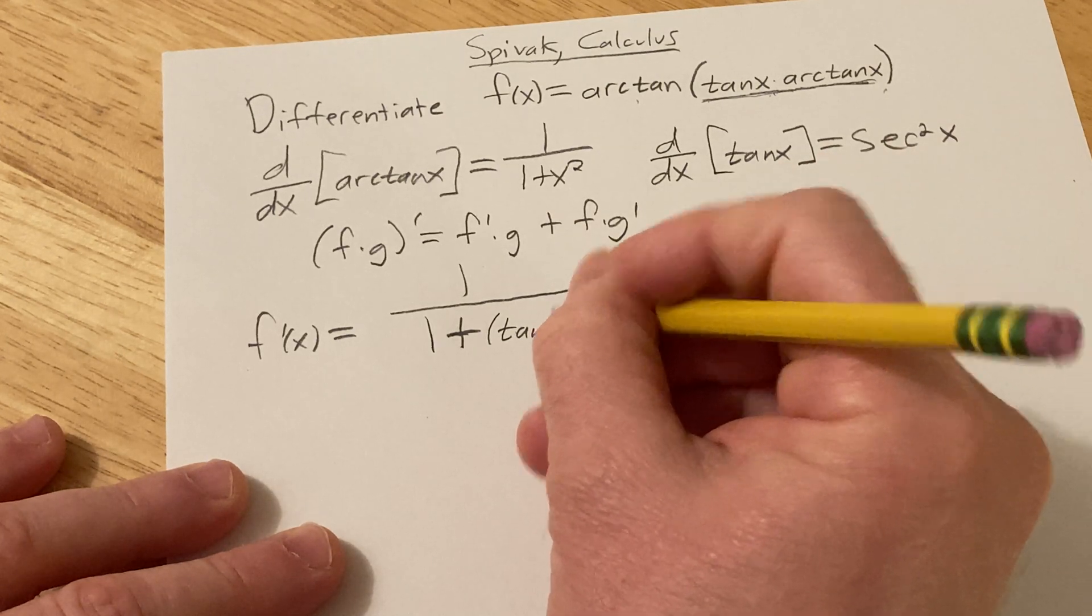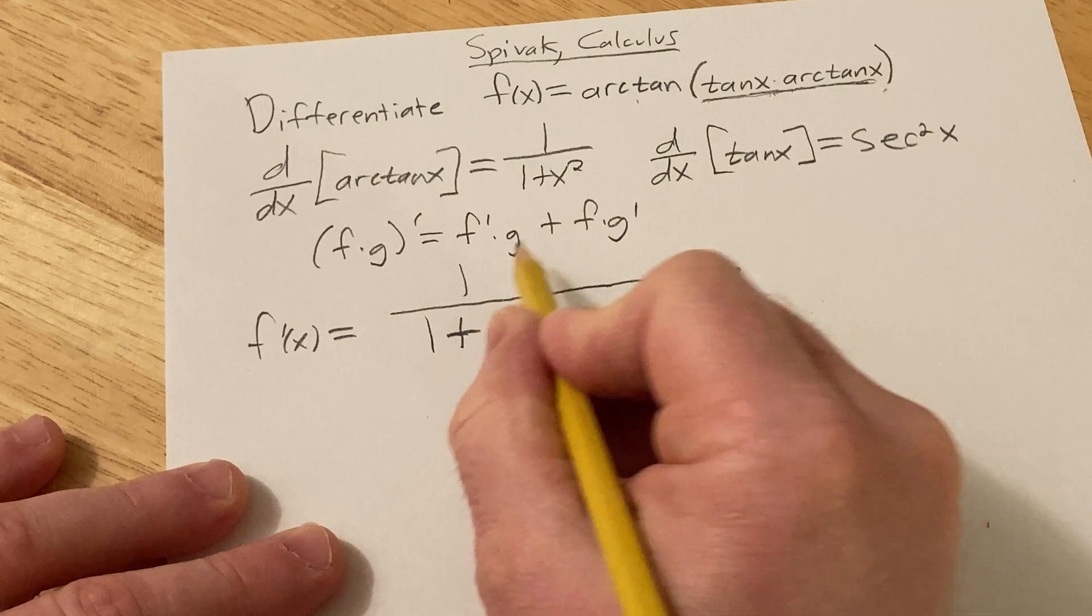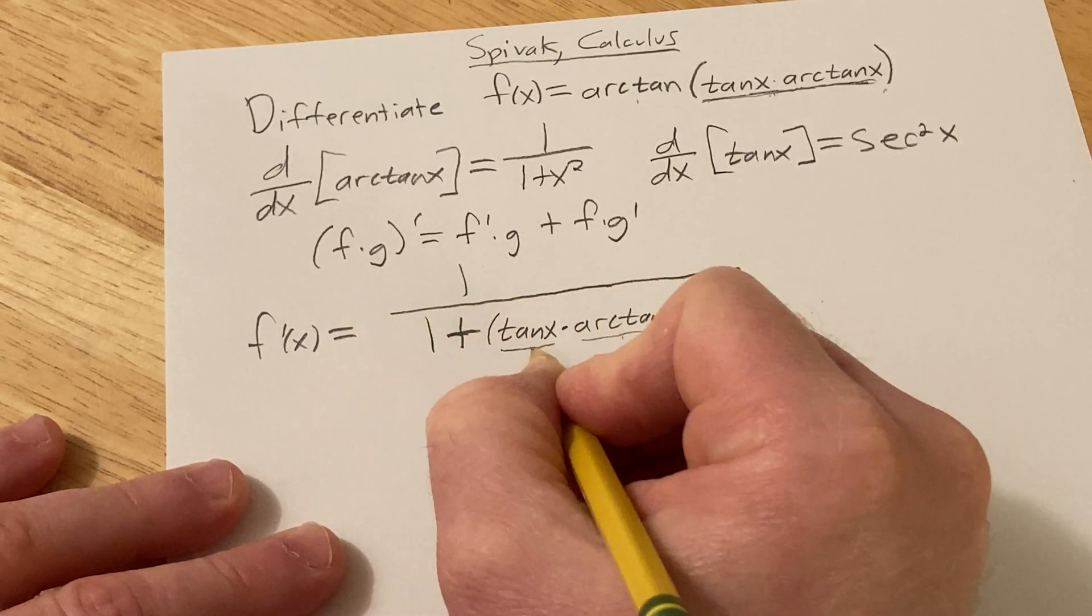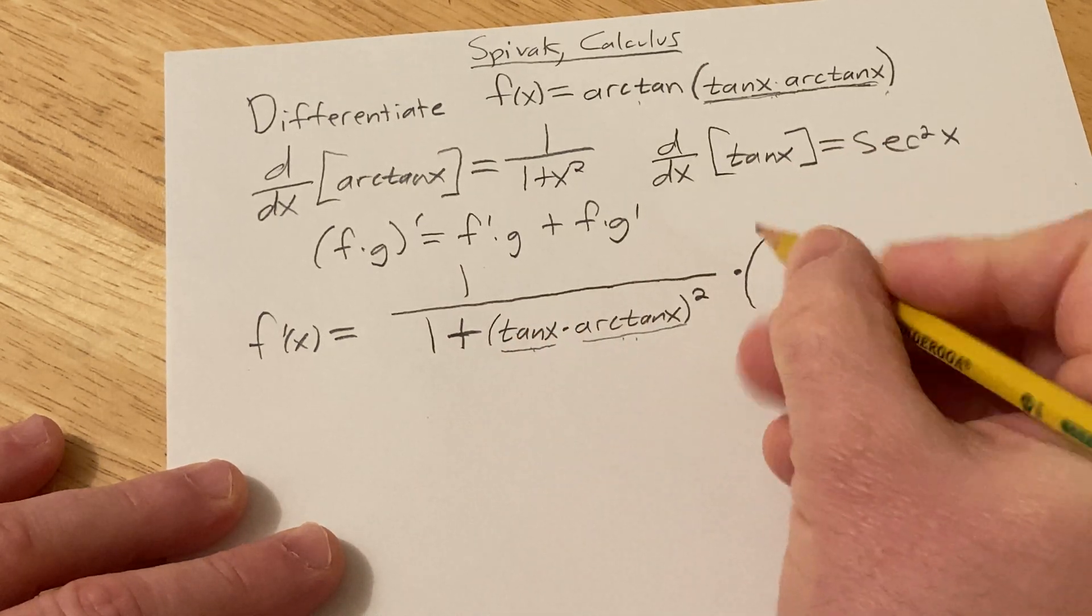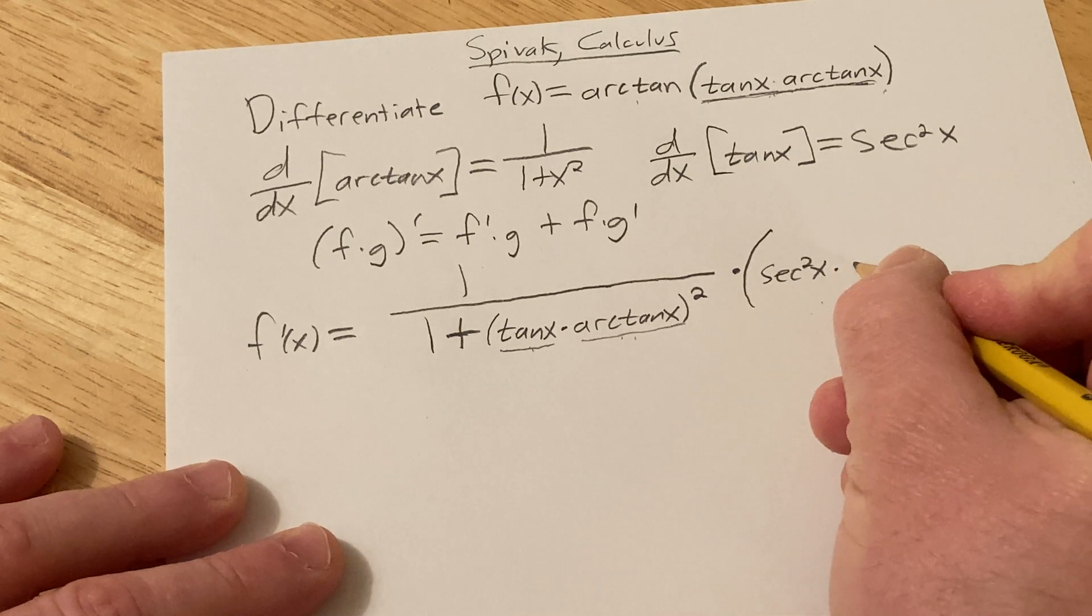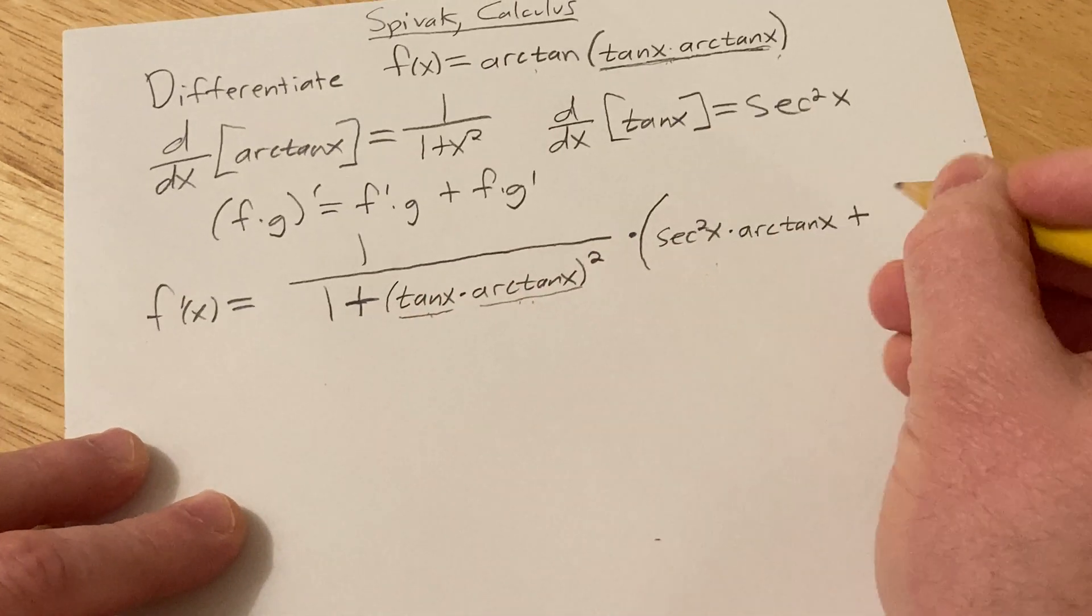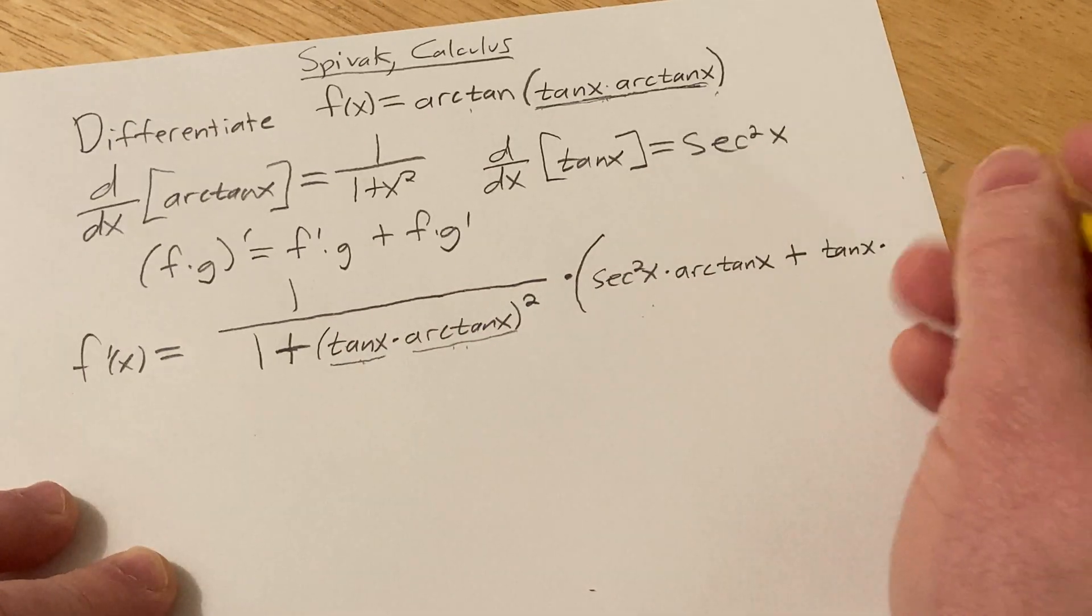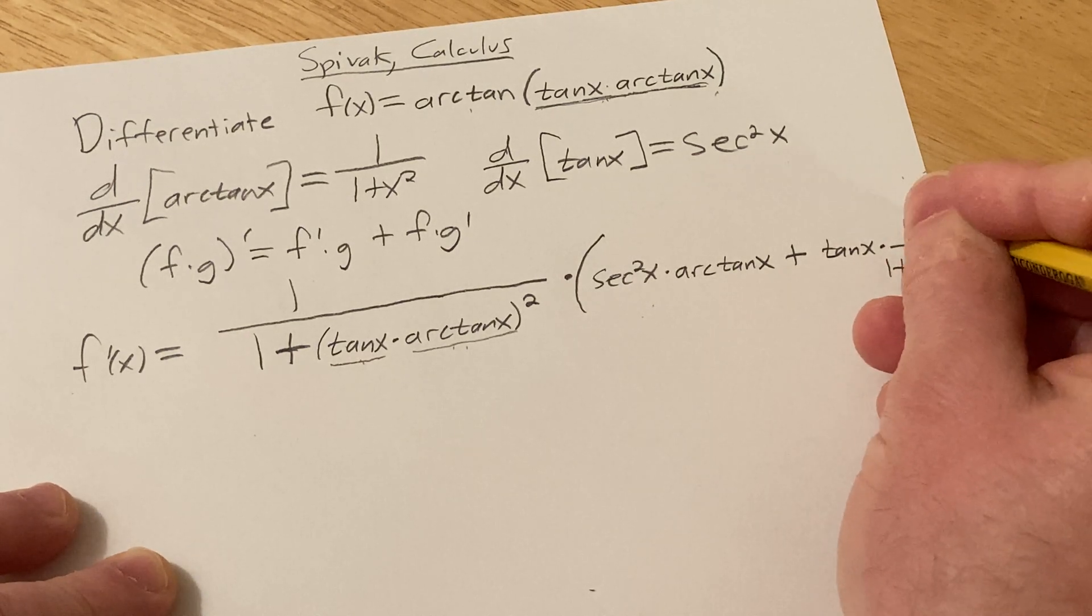So this is going to be a product rule. So we're going to use this formula here. So this is our first function, that's our f. This is our second function, that's our g. So first and second, is the derivative of the first, which is secant squared x times the second, which is arctan of x, plus the first, which is tangent of x times the derivative of the second, which is 1 over 1 plus x squared.